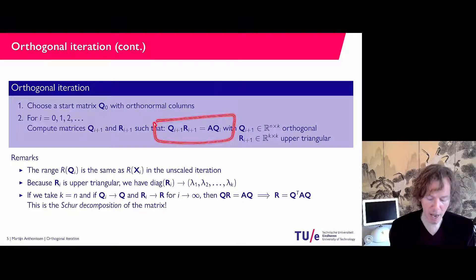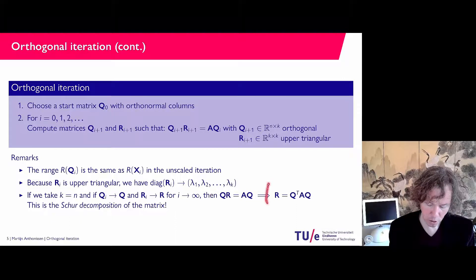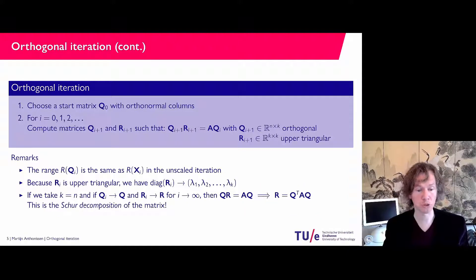Then if the Q matrices converge and the R matrices converge, then in the end from this iteration, if we have convergence, then we get Q times R as A times Q. In other words, R is Q^T A Q. That's a similarity transformation, so R has the same eigenvalues as the original matrix A, and we have found the Schur decomposition of the matrix.